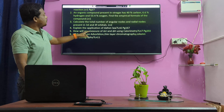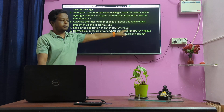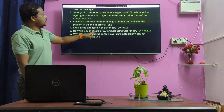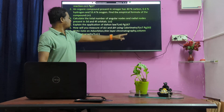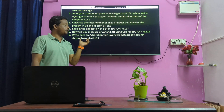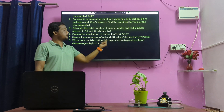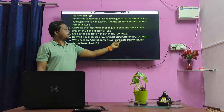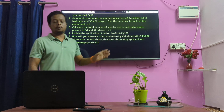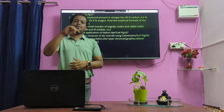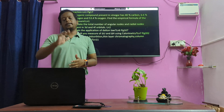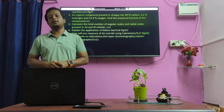How will you measure delta U and delta H using a calorimeter? Write a note on absorption chromatography, thin layer chromatography, and column chromatography.